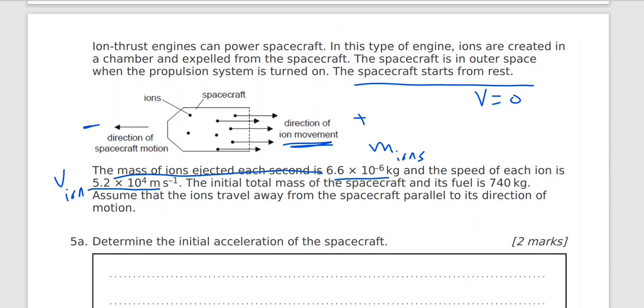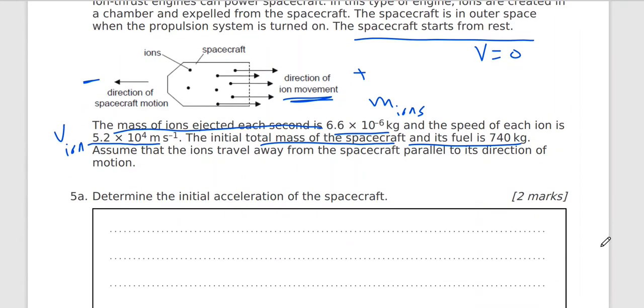The initial mass of the spacecraft and the fuel. So this is M for the spacecraft plus the fuel equals 740 kilograms.